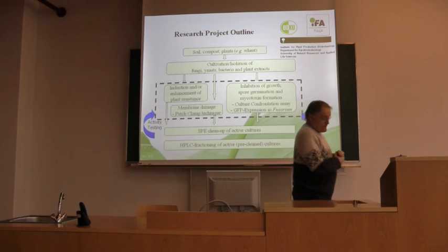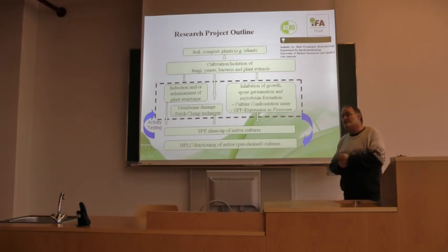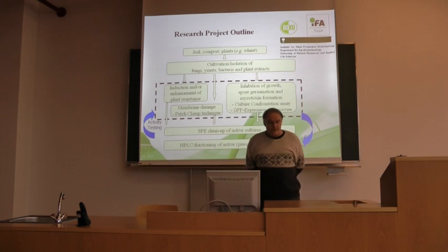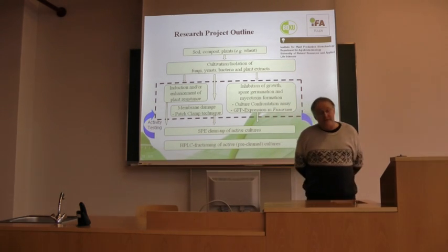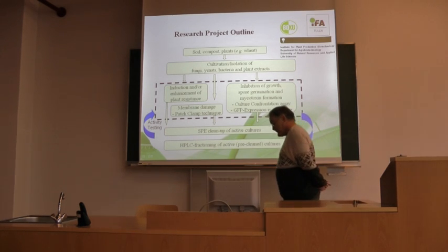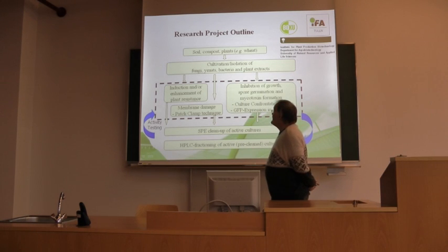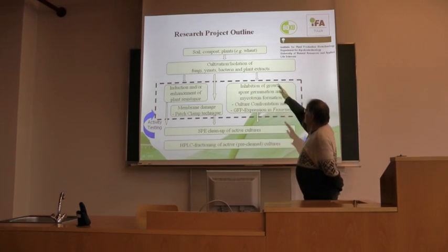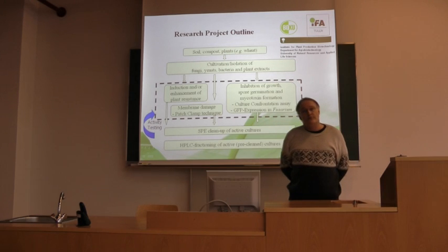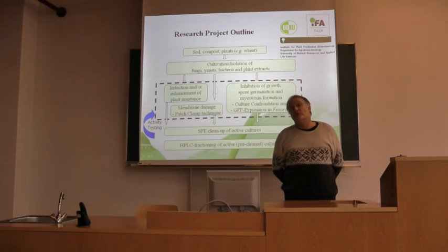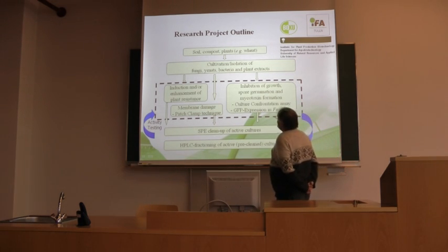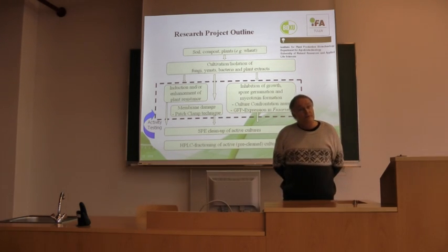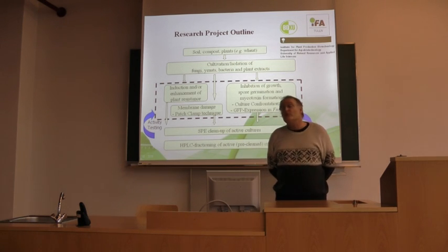In order to do this, I have illustrated the project outline here. If you want to isolate antagonists — microorganisms, either bacteria, fungi, or yeasts — you have to isolate them from soil or compost, but also from natural habitats such as anthers of wheat or silks of maize, which is a very good source for such organisms. We are also searching for active substances in plants, especially in resistant wheat varieties.